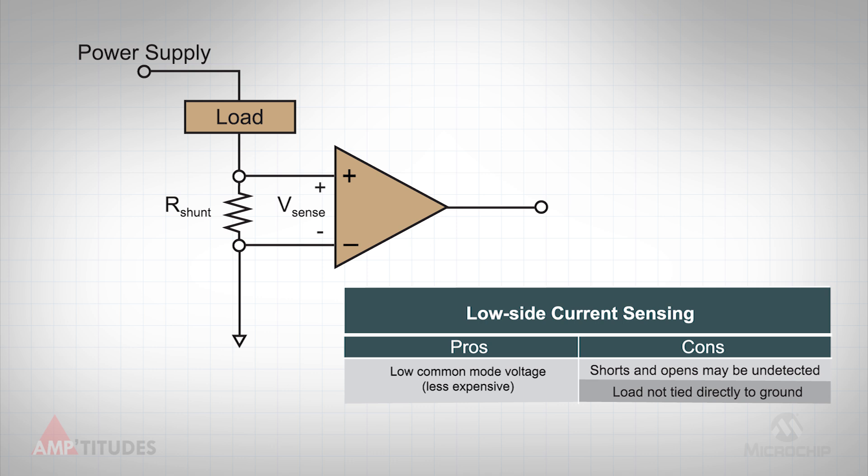As alluded to earlier, one disadvantage of low-side current sensing is that the shunt resistor is placed between the load and ground, which can cause ground loop issues, since the load may not be at the exact same ground potential as the rest of the circuitry.